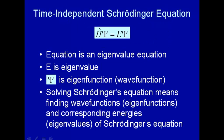So E is the eigenvalue and psi is the eigenfunction — often referred to interchangeably as the wave function. What does it mean to solve Schrödinger's equation? To solve it, you have to find the eigenfunctions — find psi — and the corresponding energies, or eigenvalues. In our study of quantum mechanics, given an operator, we'll be trying to find the eigenfunctions of that operator and the corresponding eigenvalues.